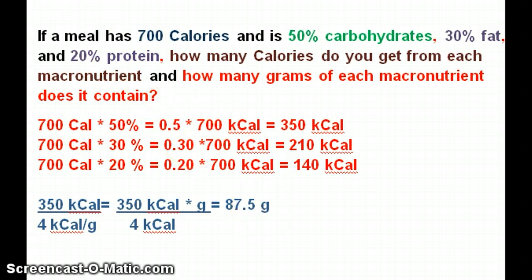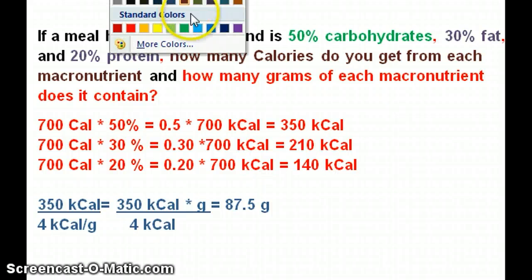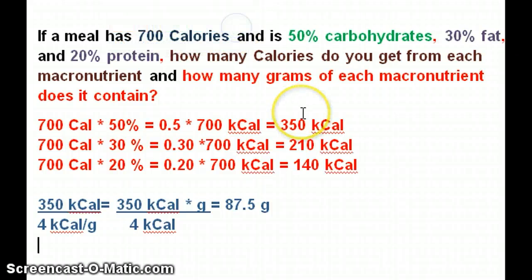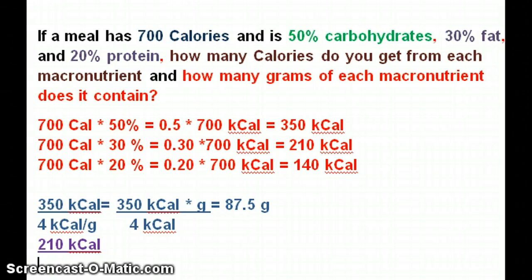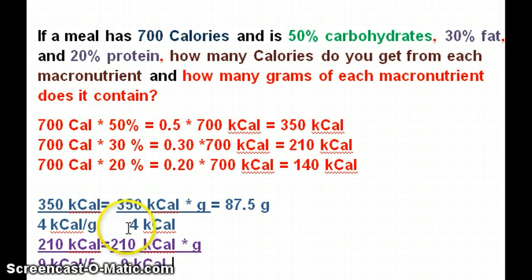Now let's do that with lipids. I have 210 kcal from lipids and the energy density for lipids is 9 kcal per gram. So that gives me 210 kcal times grams over 9 kcal. The kcal cancel out and I'm left with 23.33 grams.